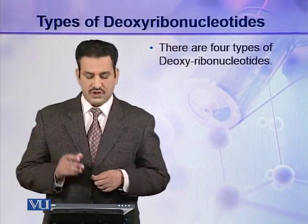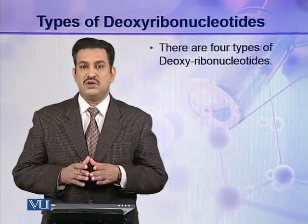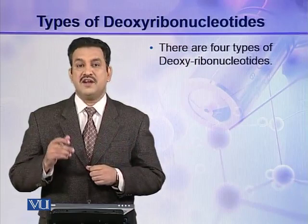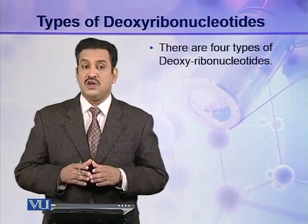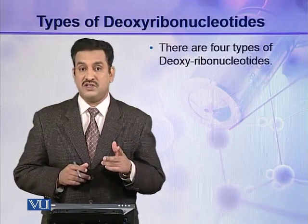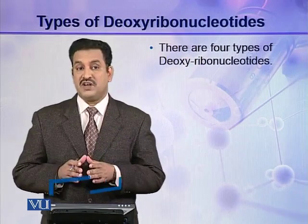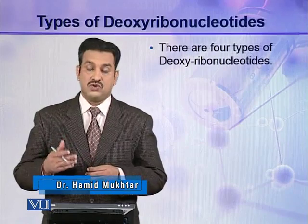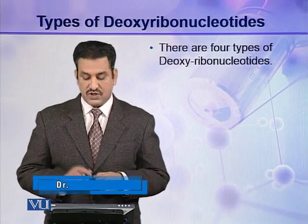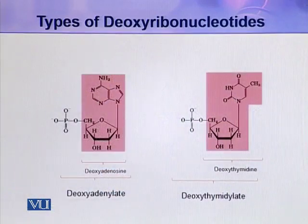Let us look at the types of deoxyribonucleotides. As you have seen in a nucleotide molecule, there are three components: phosphoric acid, pentose sugar, and a nitrogenous base. Two of these components — phosphoric acid and pentose sugar — are the same in all deoxyribonucleotides. The third component, the nitrogenous base, varies. So on the basis of the type of nitrogenous base, there are four types of deoxyribonucleotides present in a DNA molecule.